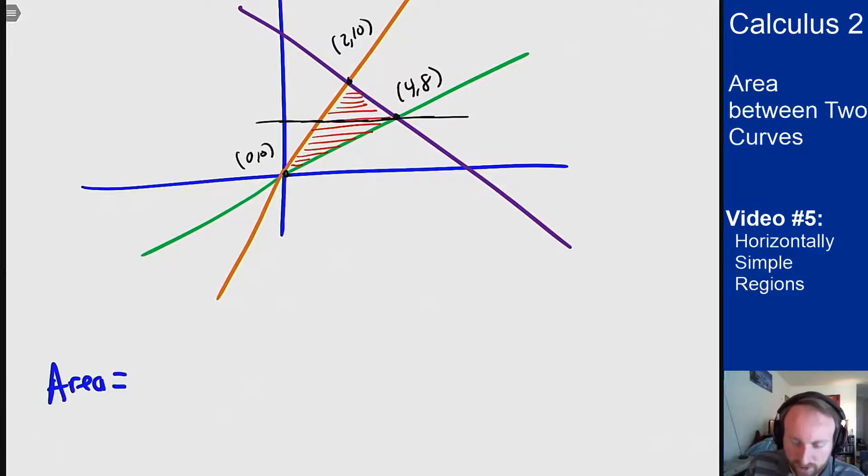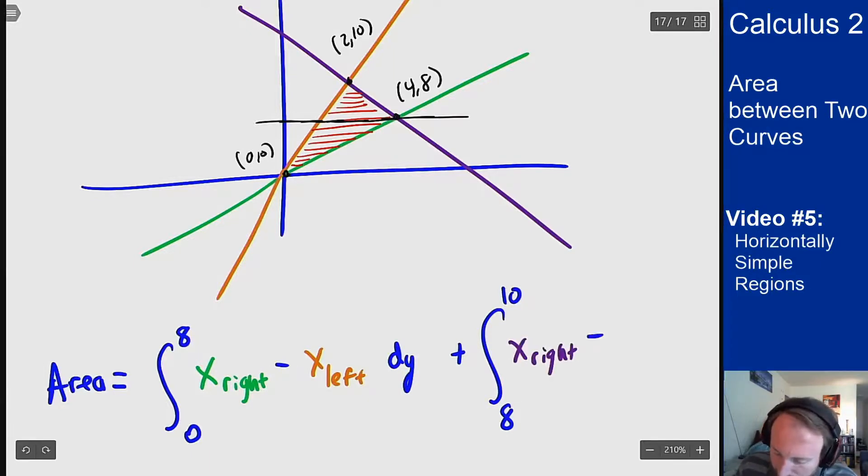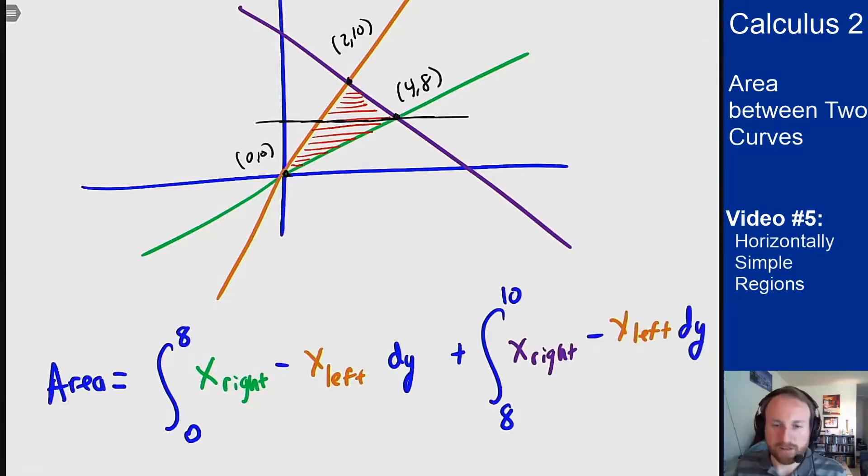So the area we can find by the following. The first is the bottom region which in terms of y bounds, we're doing dy integrals everything has to be in terms of y and have y bounds on the integrals, goes from y equals 0 to y equals 8. I will need the x right which is the green function minus the x left which is the yellow orange function here dy plus the second one which will be the same picture from y equals 8 to y equals 10. The right side is the purple function and the left side is the orange again.